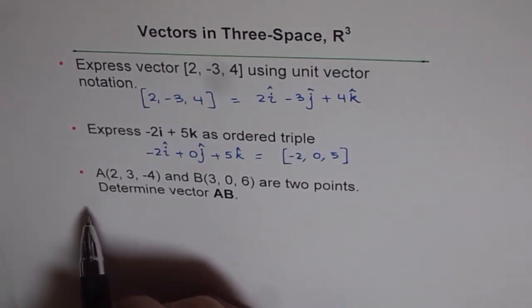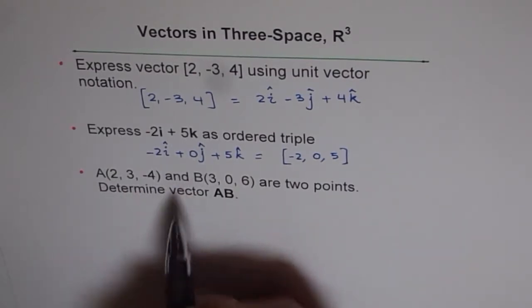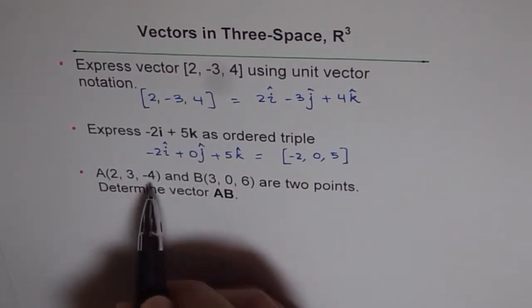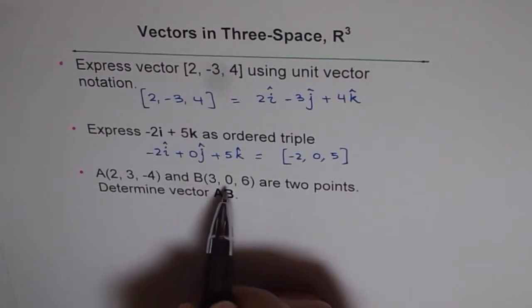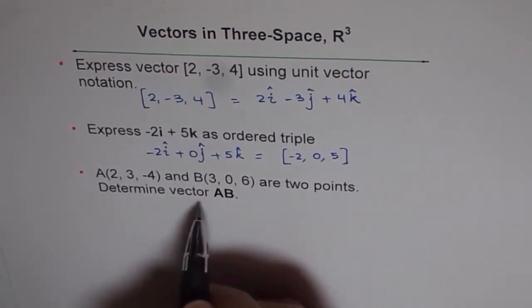Now, question 3: we are given vector a as (2, 3, -4). And this is not a vector, it is a coordinate point. So A(2, 3, -4) and B(3, 0, 6) are two points. Determine vector AB.